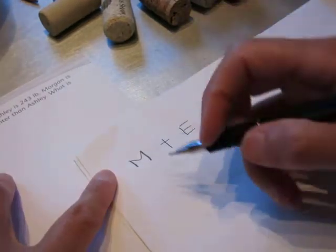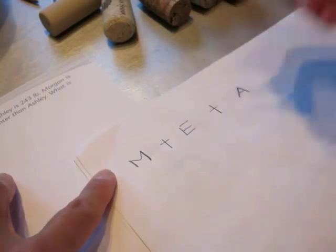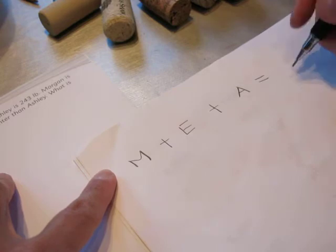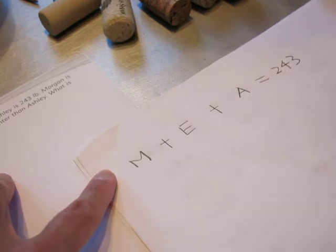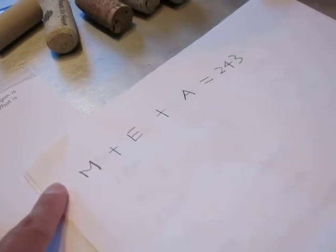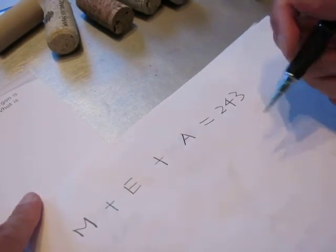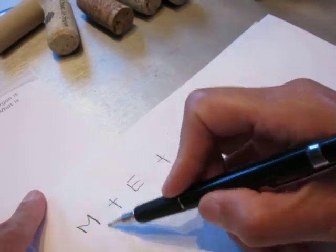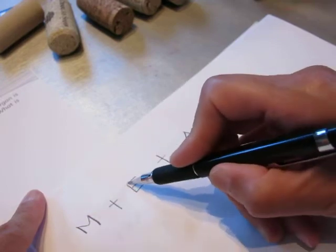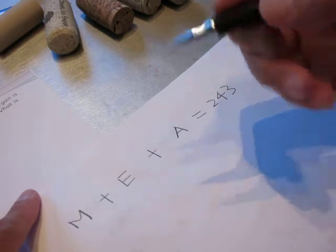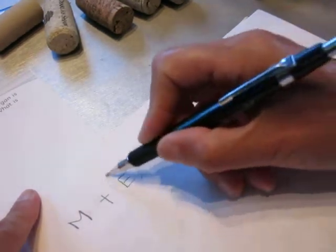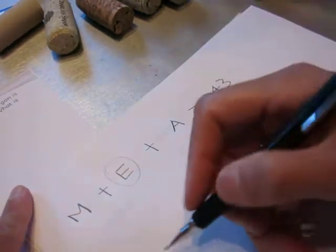So Morgan is 30 pounds heavier than Emily. Altogether they are 243 pounds. Morgan is 30 pounds heavier than Emily. So we put Emily's weight as the base weight. How about that?